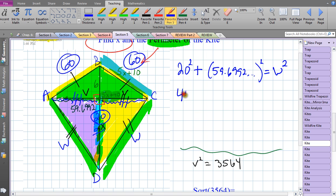What do we know? We know 20 squared plus 59.6992 and a bunch of other decimals squared should be equal to w squared. Let's do some more arithmetic. 20 squared is 400, and if you think about it, we just took the square root of this number which was v squared. Since v is 59.6992 and a bunch of other decimals squared, v squared has to be exactly 3564, and that equals w squared.